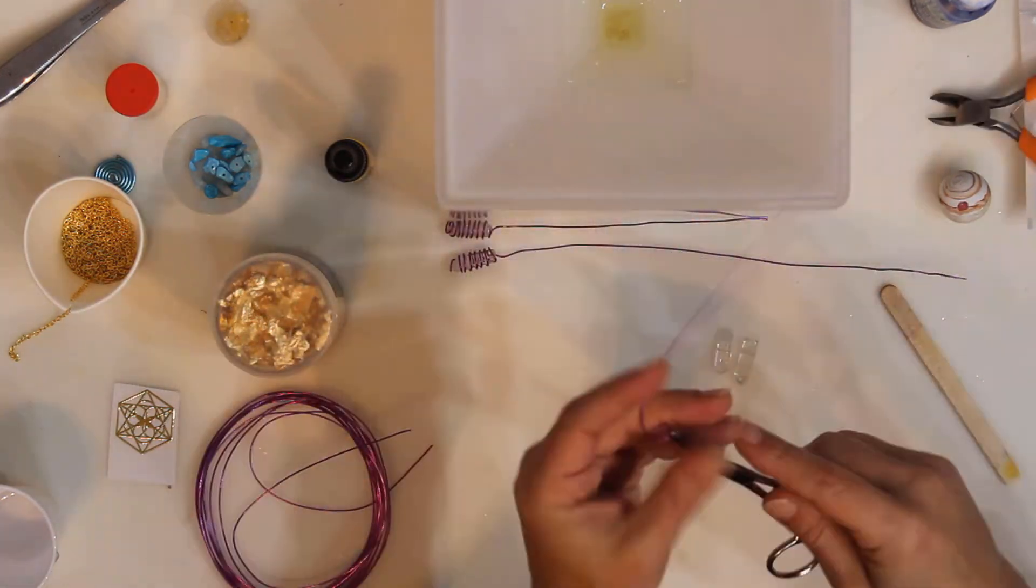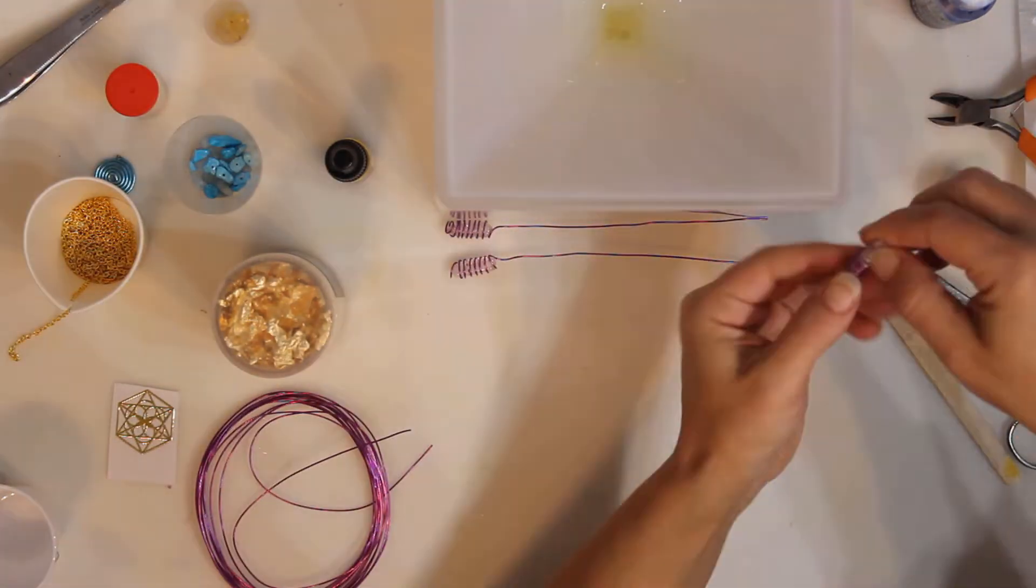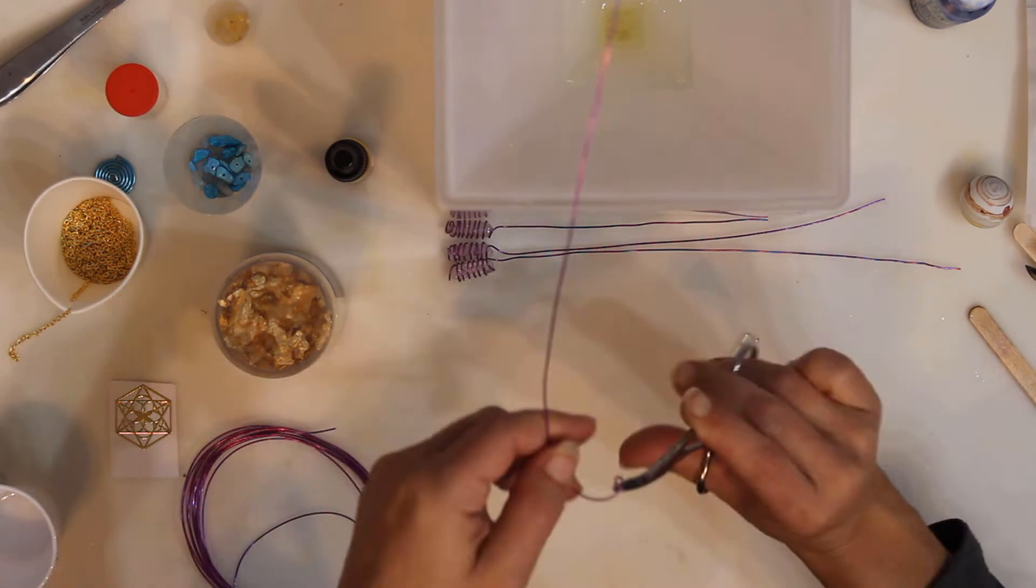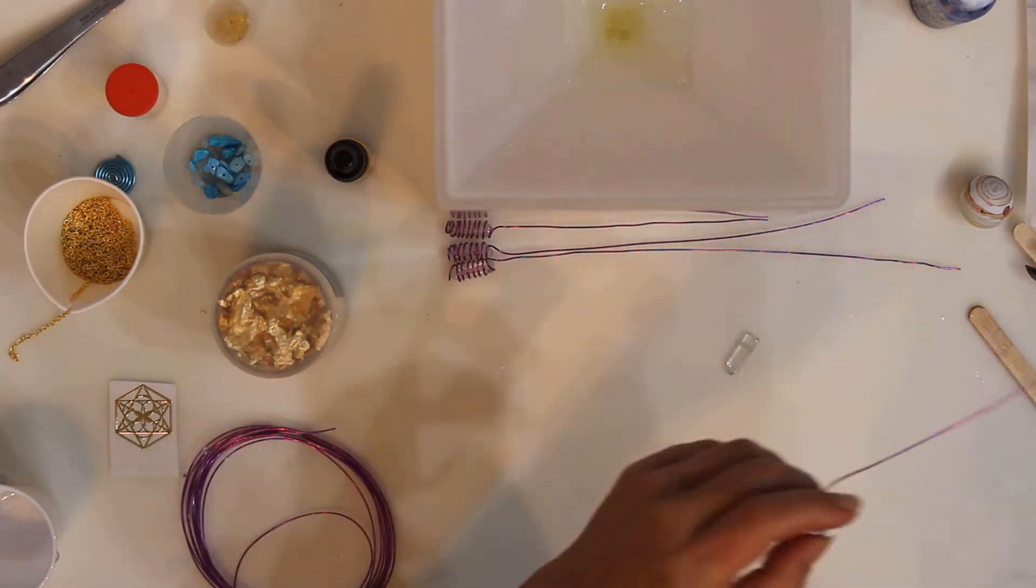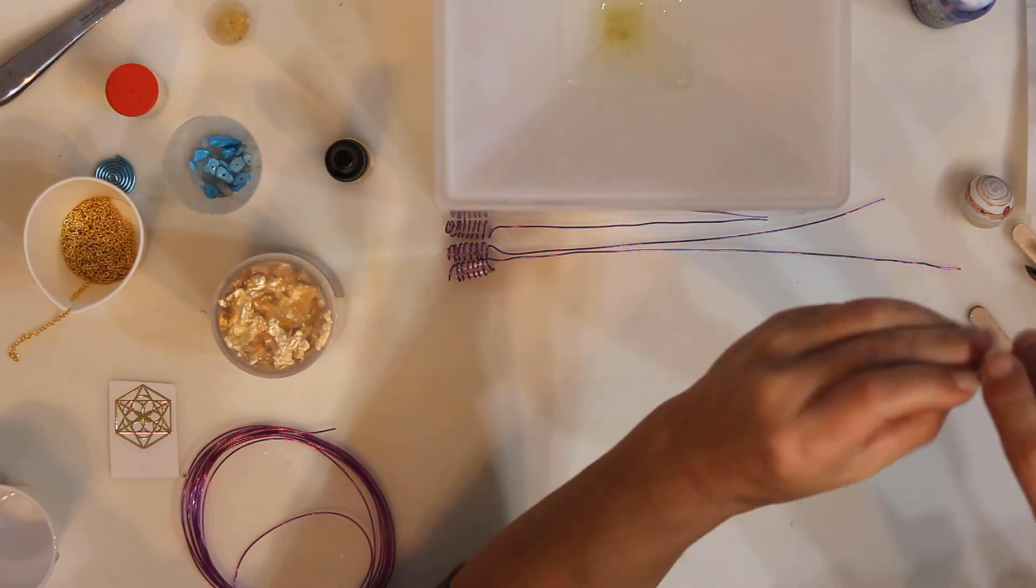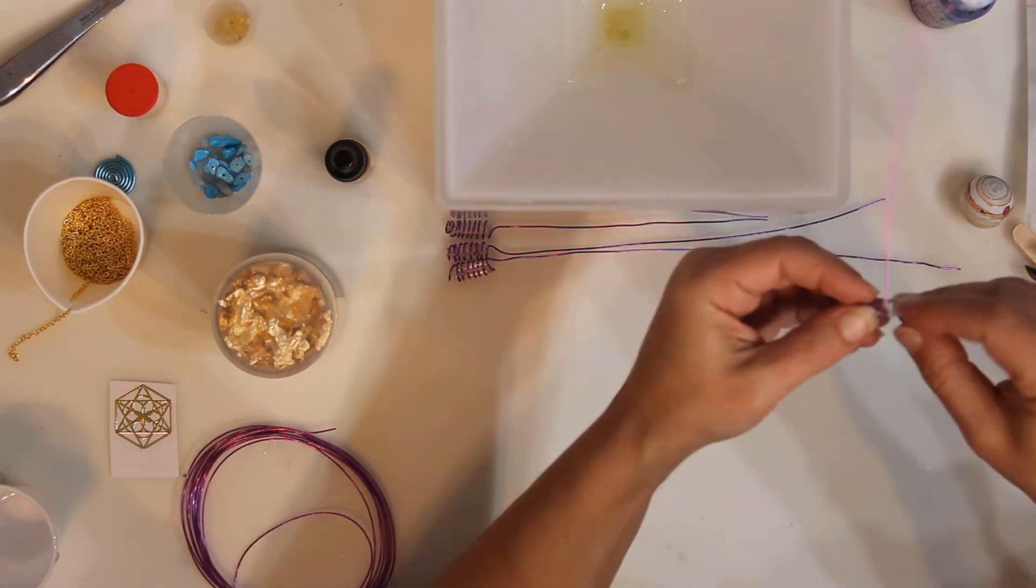The spiraling wire represents the way matter and energy move through space and time. The crystals have been cleared and charged in sunlight and moonlight and then programmed with the 183.58 hertz frequency.